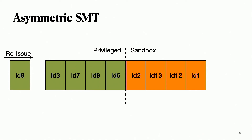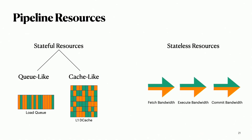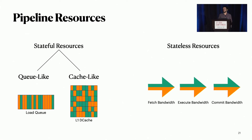Interestingly, the same mechanism can work for a wide range of pipeline resources with just a small variation. We categorize pipeline resources broadly into two categories. Stateful resources are those that hold state across multiple cycles — resources like the load queue, instruction queue, or physical registers. If you make a stateful resource asymmetric, you must ensure that you can return the borrowed resource immediately, and therefore you need to flush and reissue instructions. Luckily, modern processors are already well equipped to deal with such scenarios — for example, they have flushing and reissuing mechanisms for branch prediction and many other scenarios.